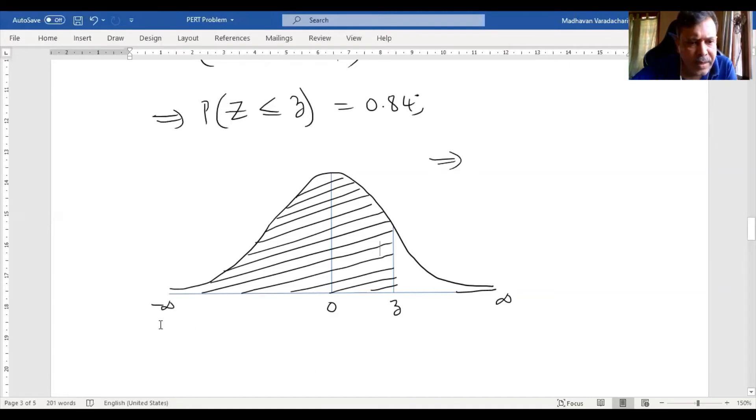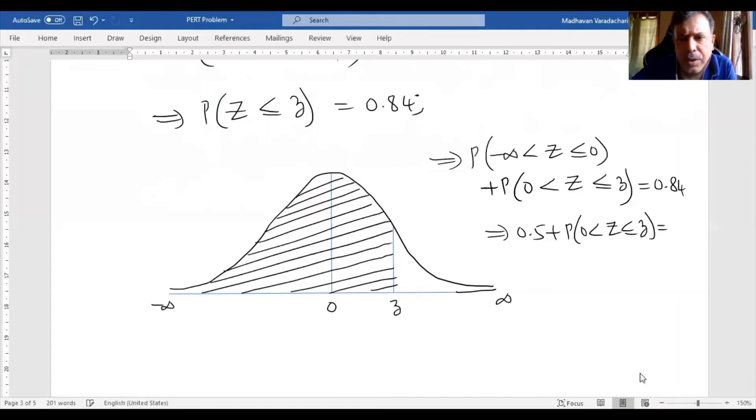This area is going to be shaded towards the left because it has a less than or equality sign. That area coverage is around 0.84, which is 84%. This has to cross 50%, so I should plot that z value after 0. This area which is 0.84 can be split: probability negative infinity to 0 plus probability 0 to small z equals 0.84.